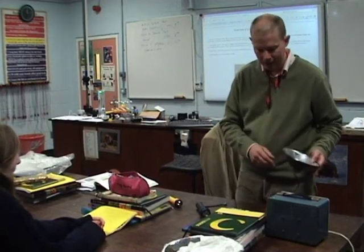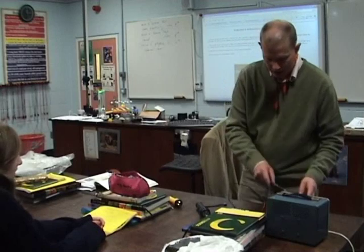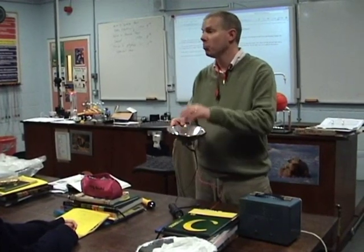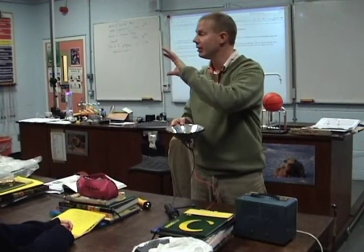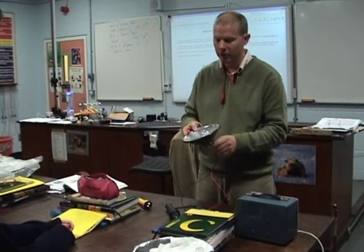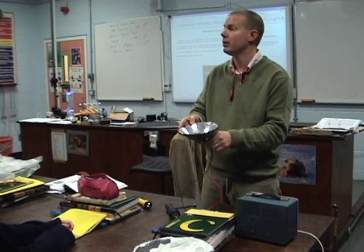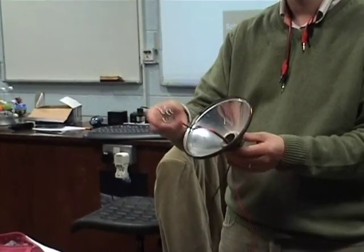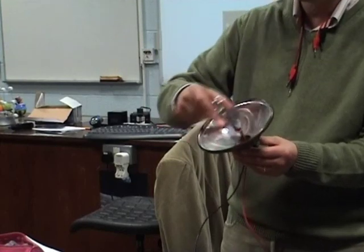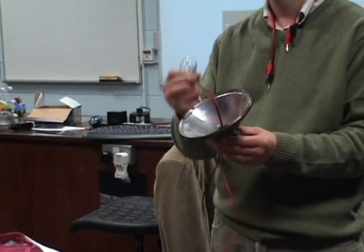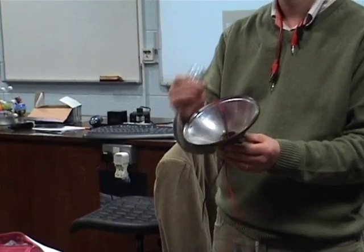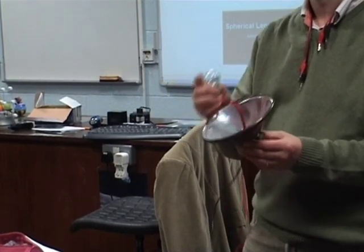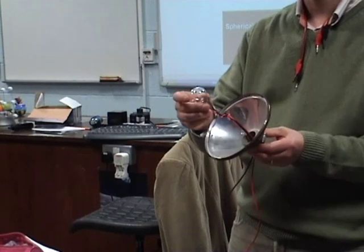The first one we're going to talk about is the headlight of a car. To see how a headlight of a car works, it's more than just shining a light out the front — there is a little bit of physics going on. You've got a mirror behind it, and the position of the light bulb is pretty important. Where does the light bulb have to be? At the focal point. Why at the focal point? So the beams go parallel.